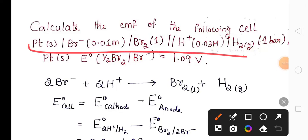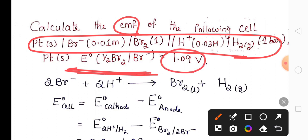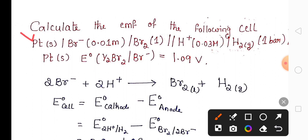For this symbolic notation, we need to calculate the EMF of the cell. E° of Br₂/Br⁻ is 1.09 volts has been given. Now this symbolic notation we will convert into a redox reaction.